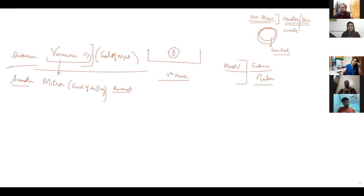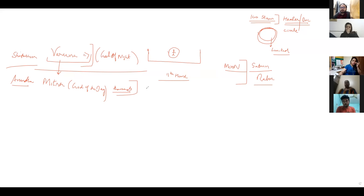My own Janma Nakshatra is Anuradha, and my son Naman's lagna lord — Mars — is in Shatabhisha. From the day he was born we have been like best friends, inseparable. I have never treated him like my son; I have always treated him as a very good friend. If this combination exists as life partners or friends, it is a great combination.